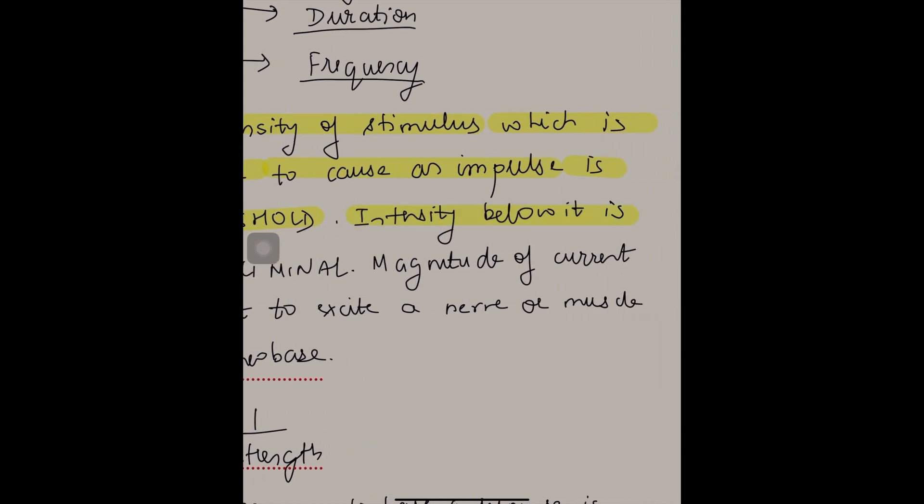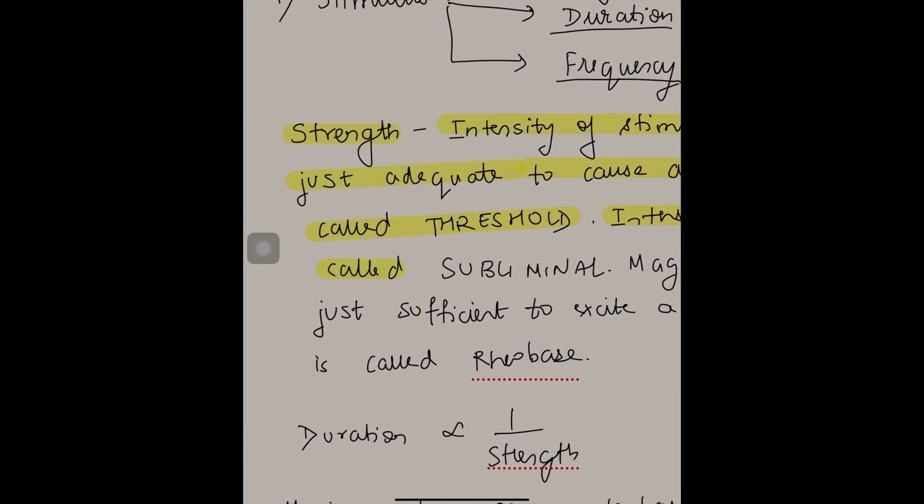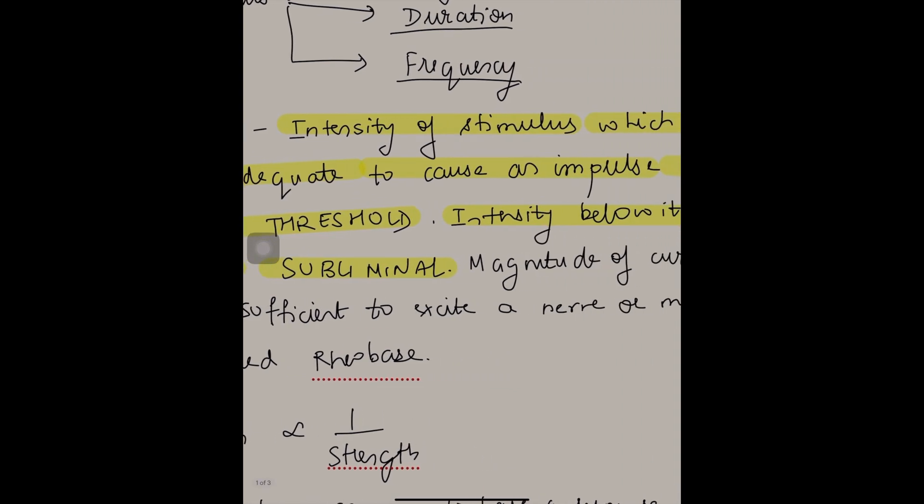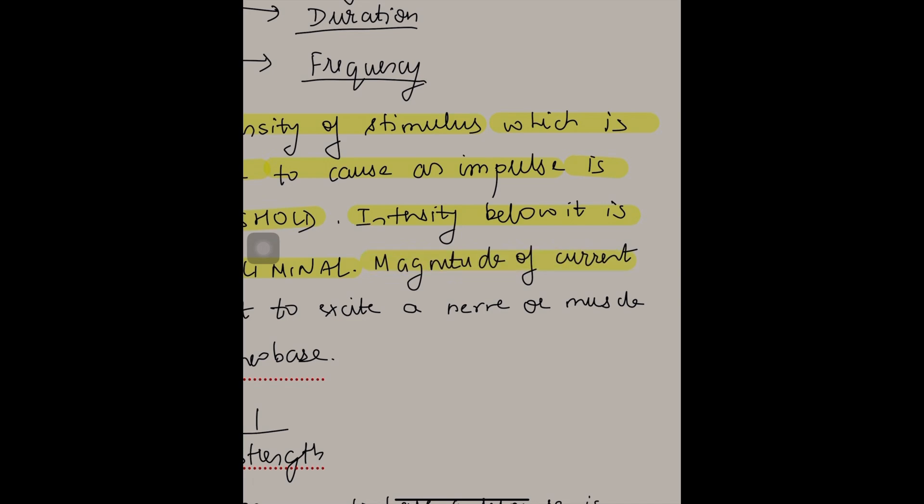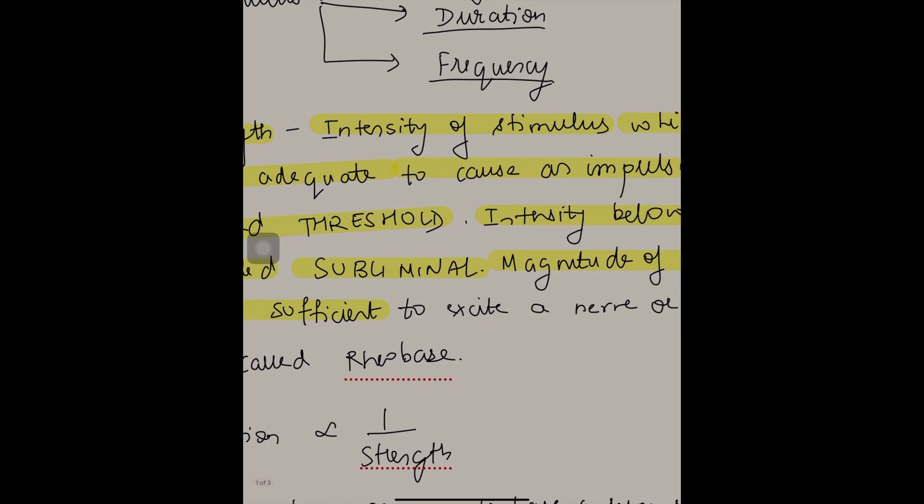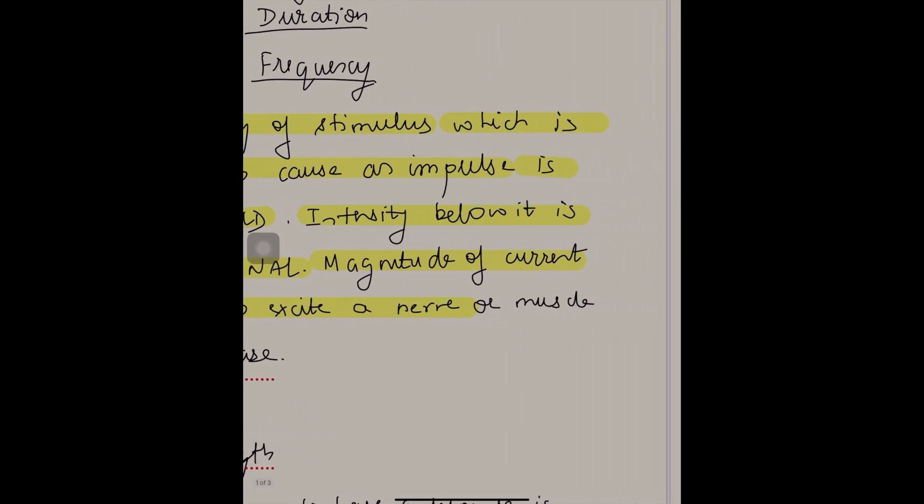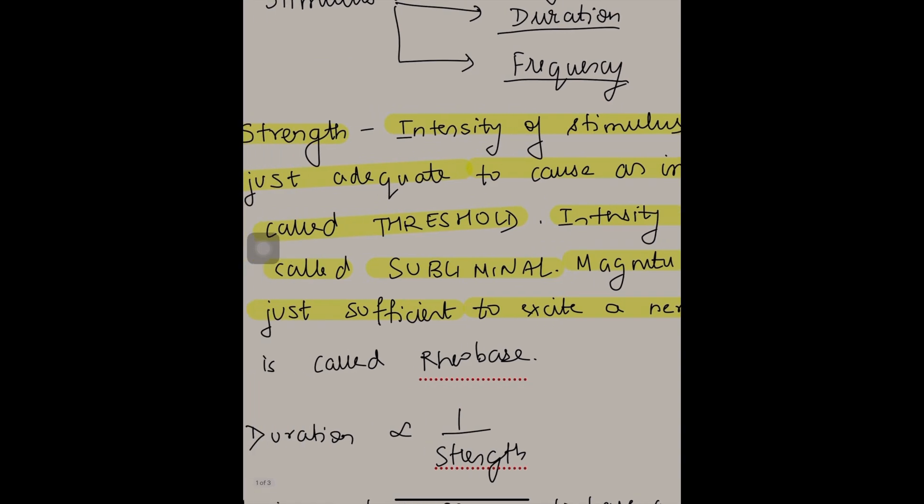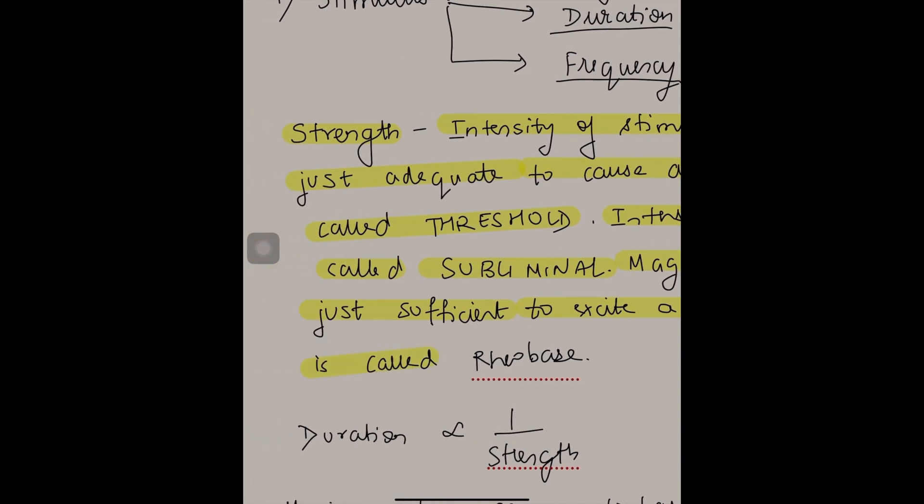The intensity below threshold is called subliminal. Then you define subliminal. The magnitude of current which is just sufficient to excite a nerve or muscle is called rheobase.